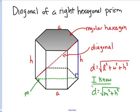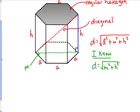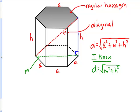In terms of the dimensions a and h, those are the only two real dimensions of this prism — each side of the hexagonal base is a and each height is h. So in terms of a, what is the length of the diagonal m? Let's take a look at the hexagonal base, which is a regular hexagon by definition.